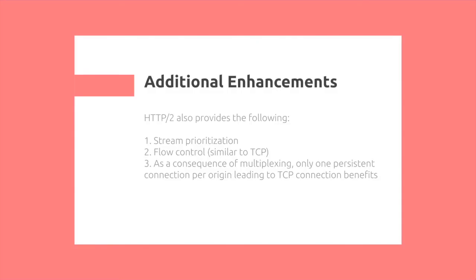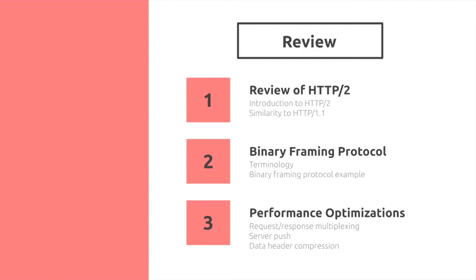Some additional enhancements include stream prioritization, where you can assign particular streams a priority so they may be sent over other streams. There is also flow control, similar to TCP. And as a consequence of multiplexing, there is one persistent connection per origin, leading to further TCP connection benefits.